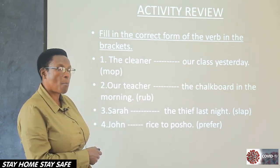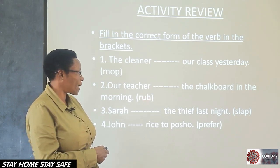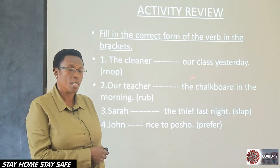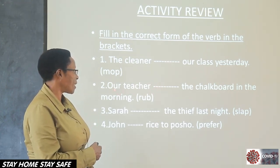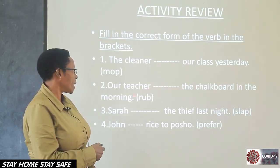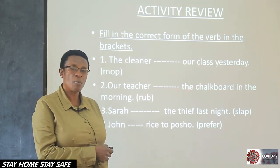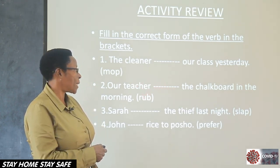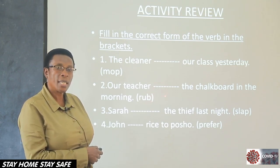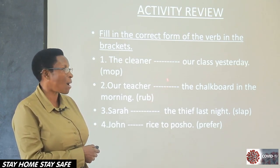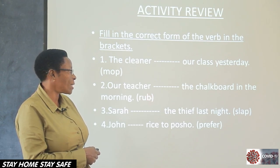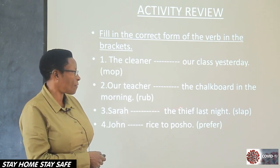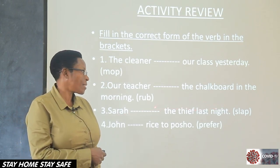Number two: 'Our teacher dash the chalkboard in the morning.' The word in brackets is 'rub.' We double the B and we add E-D, and the word becomes 'rubbed.' Our teacher rubbed the chalkboard in the morning. Let's spell the word rubbed together: R-U-B-B-E-D. That is the word rubbed.